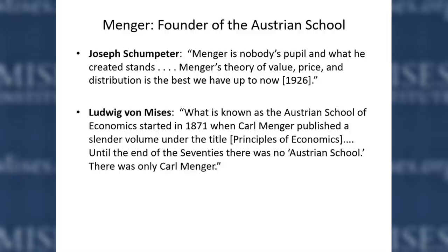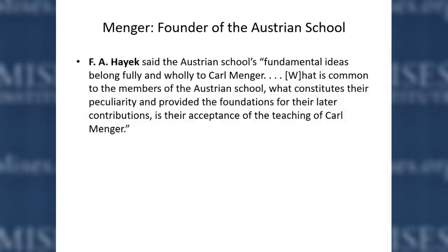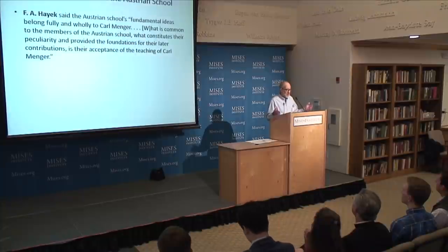But pretty soon in the 1880s, Menger began to get followers to continue and advance his work. Frederick Hayek, also a notable historian of thought, said that the Austrian school's 'fundamental ideas belong fully and wholly to Karl Menger. What is common to the members of the Austrian school, what constitutes their peculiarity and provided the foundations for their later contributions, is their acceptance of the teaching of Karl Menger' — and that's true even unto today. All of the faculty really consider ourselves as ultimately Mengerians.